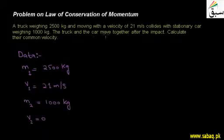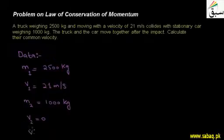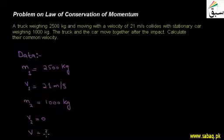The truck and the car move together after the impact. We need to calculate their common velocity after the collision. This velocity V is unknown, which we need to find.